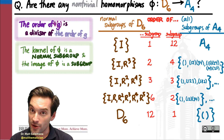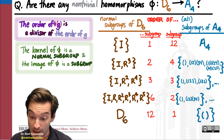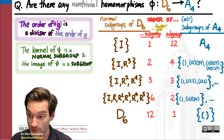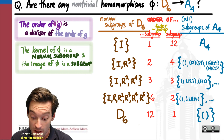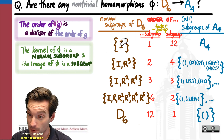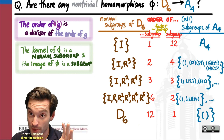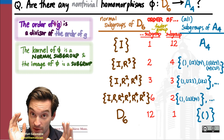This is where the magic element comes in: the First Isomorphism Theorem. The First Isomorphism Theorem tells us that the factor group of the domain by the kernel — which is a normal subgroup of the domain — will be isomorphic to the image of the homomorphism. Factor group, isomorphic to image.